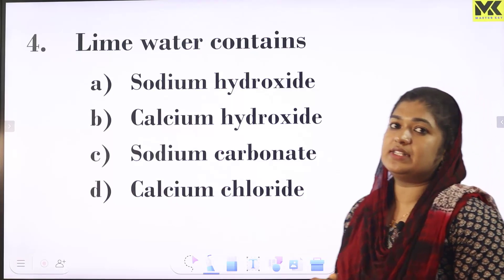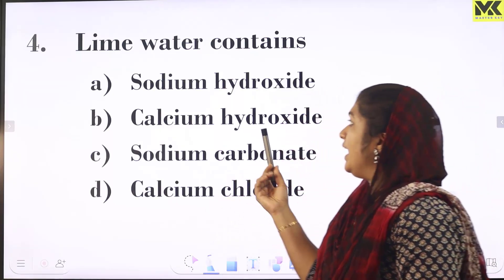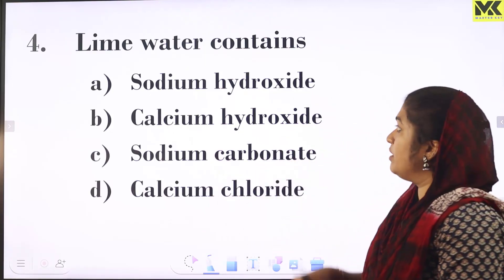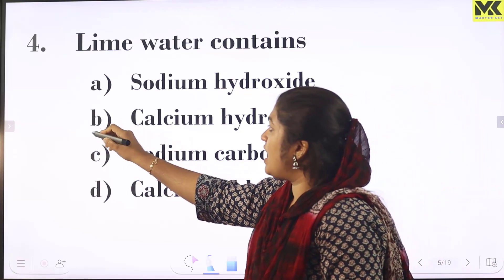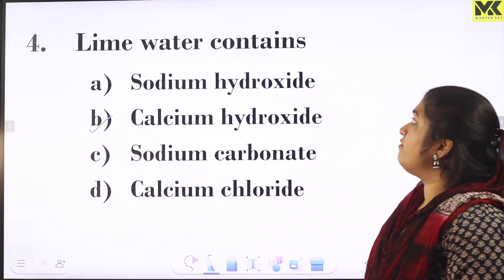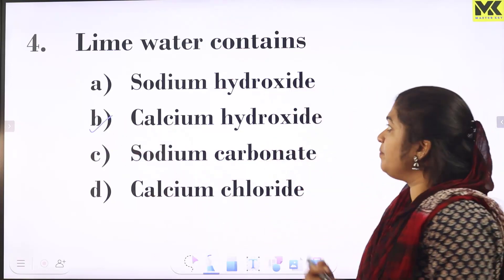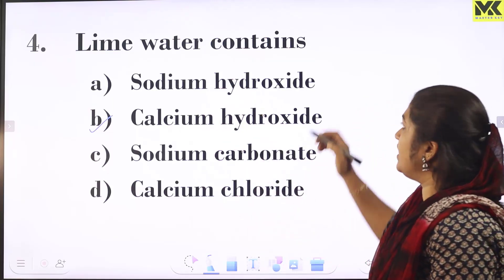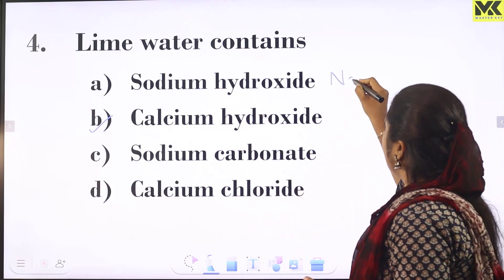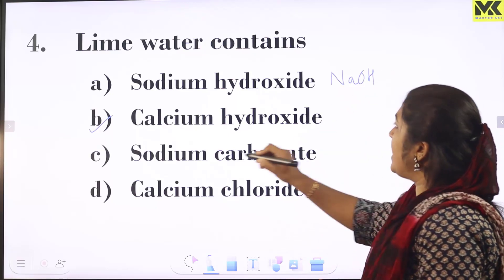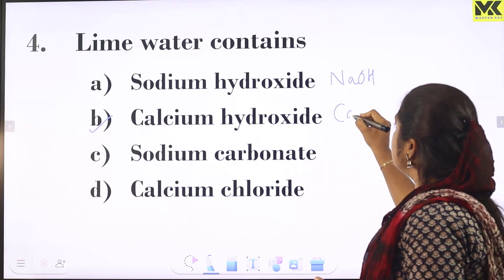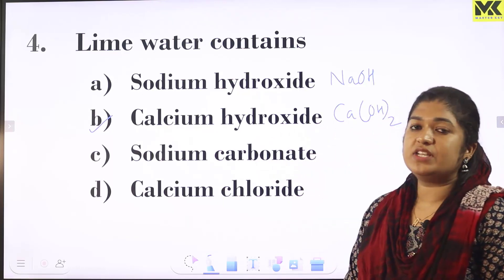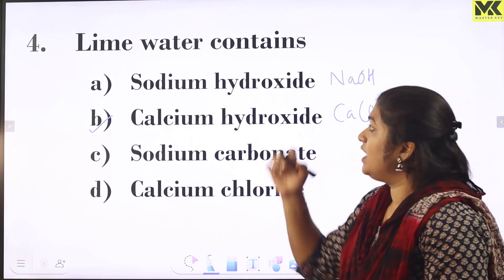The next question asks what lime water contains. Lime water is called calcium hydroxide, which has the formula Ca(OH)2. Caustic soda is NaOH, while calcium hydroxide is Ca(OH)2.